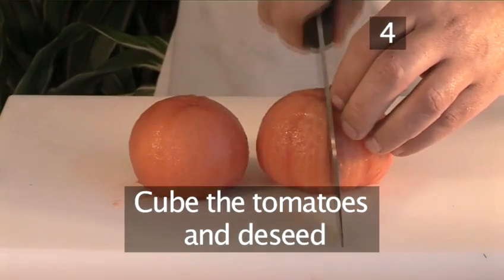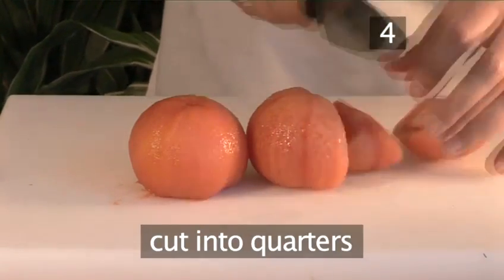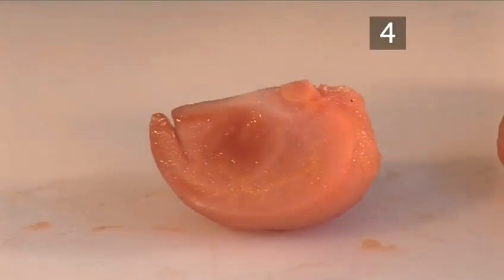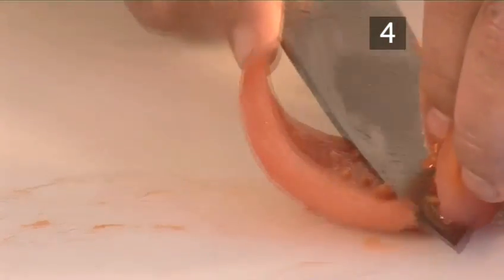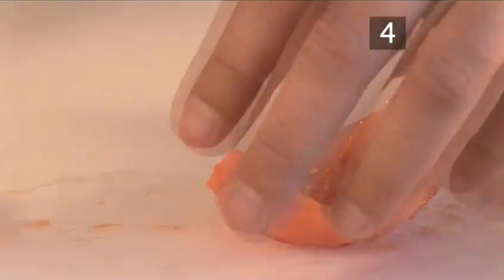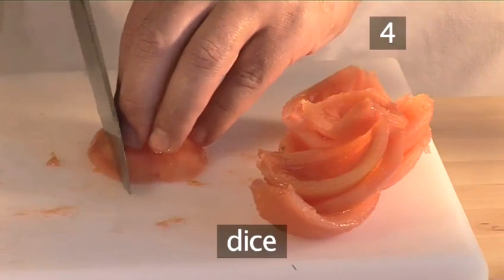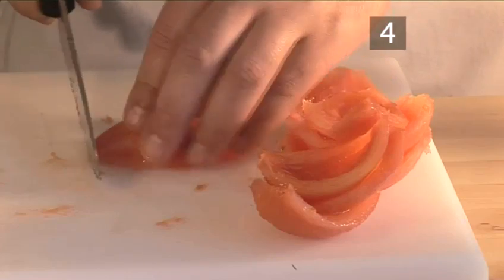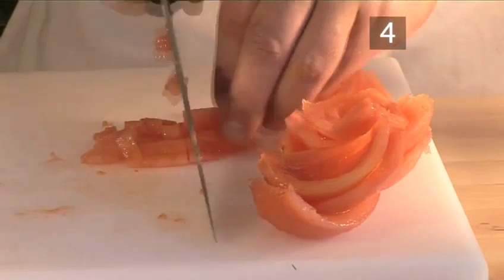Cut the tomatoes into quarters. Scoop out the seeds and dice. And there you have two perfectly peeled, deseeded, and diced tomatoes.